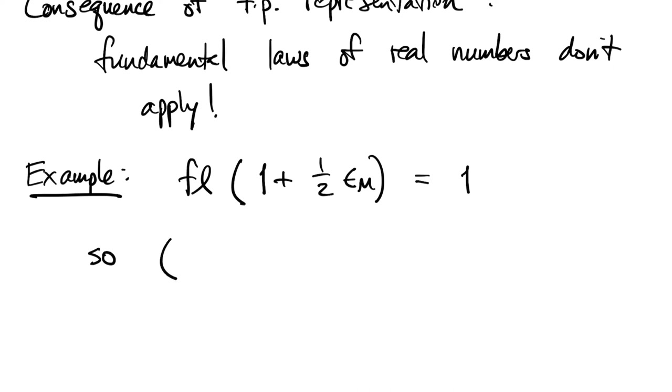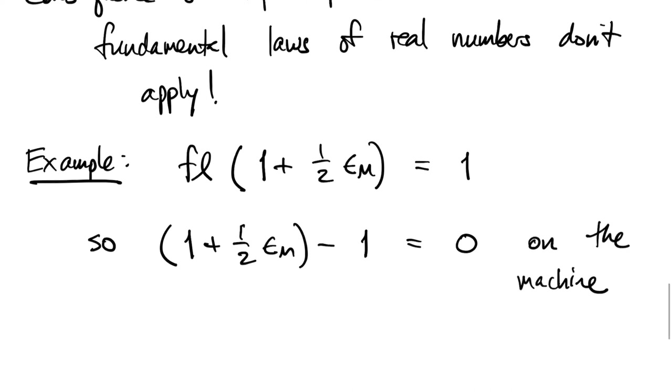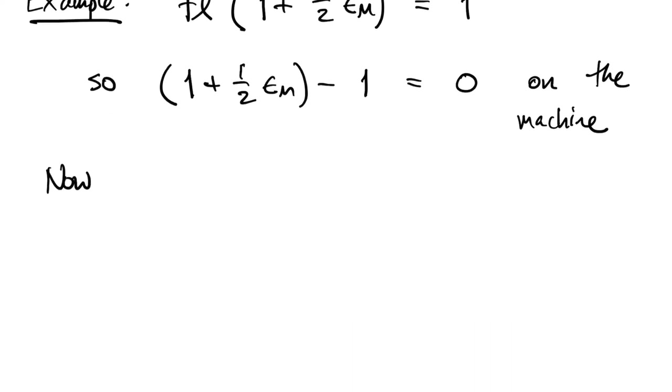on the machine, the difference between 1 plus this small change minus 1 is actually 0. That's a little bit weird, but it gets weirder.